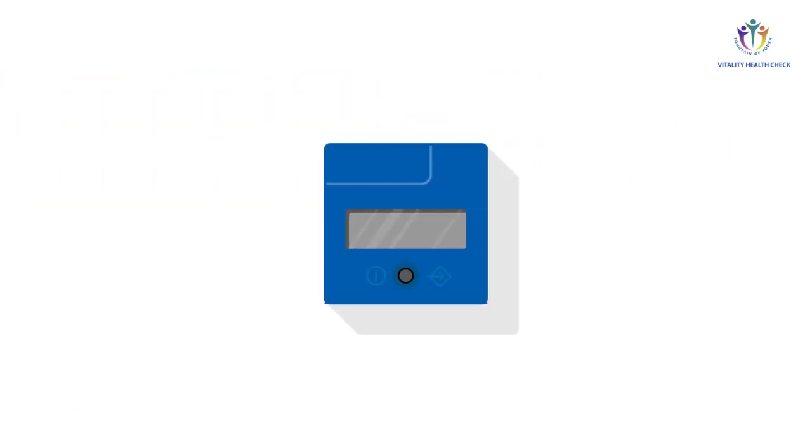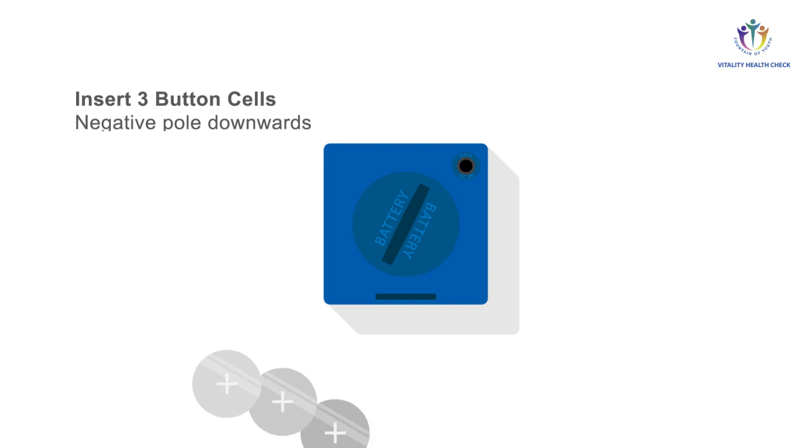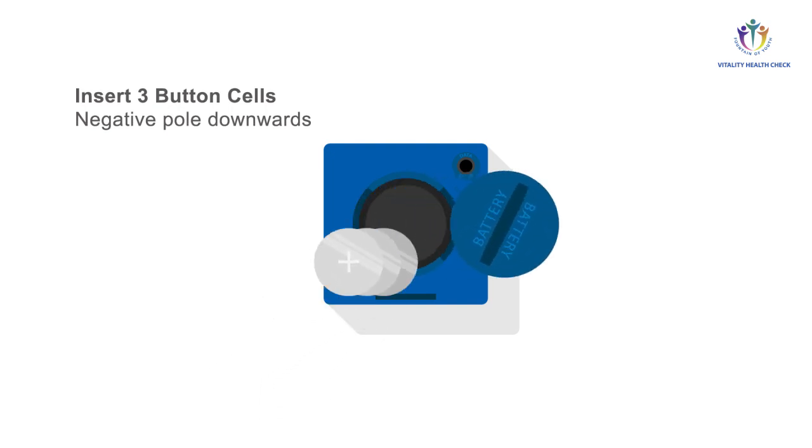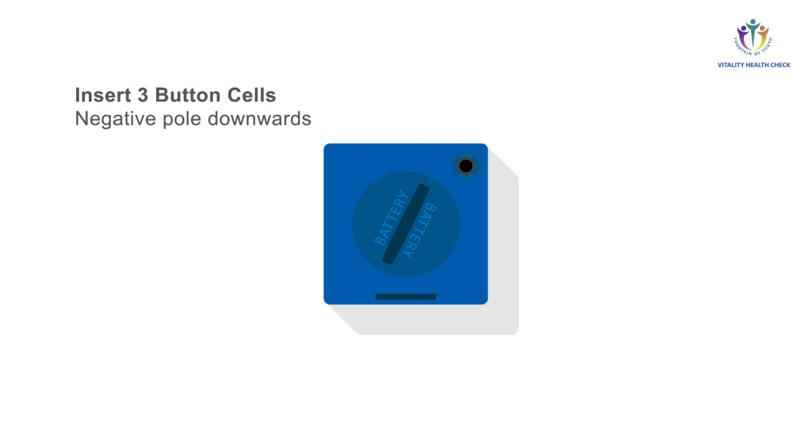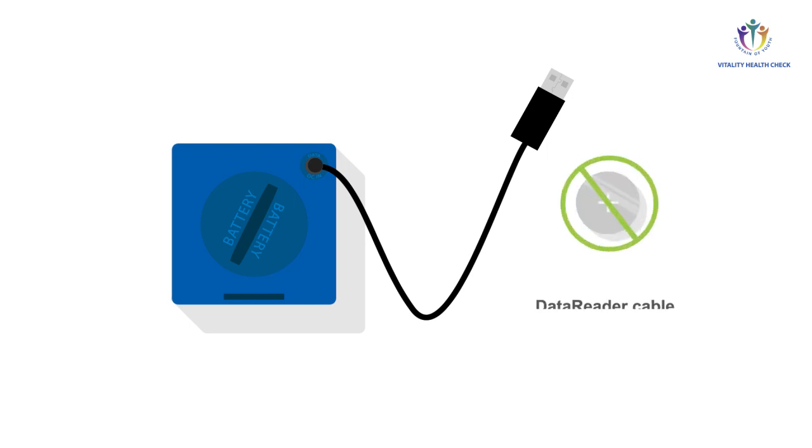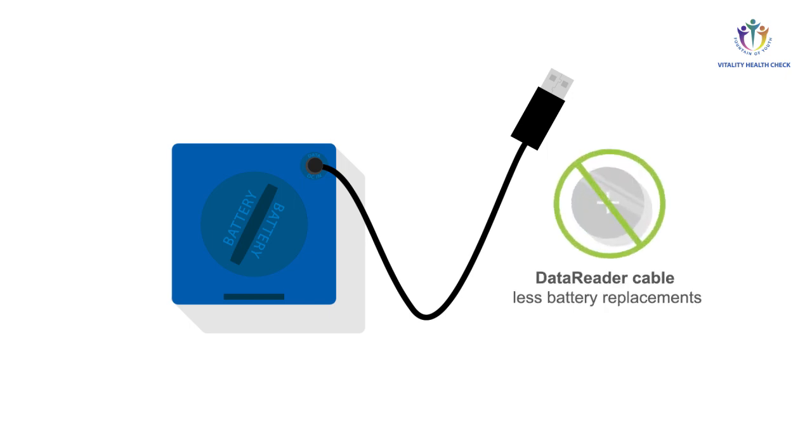For the first start of the VHC reader, please place the three button cells provided into the meter. You may also use the VHC reader with the optional data reader USB adapter cable to store or access data and to configure the device via a PC. The data reader cable allows you to ensure permanent power supply via USB, limiting the frequency of battery replacements.